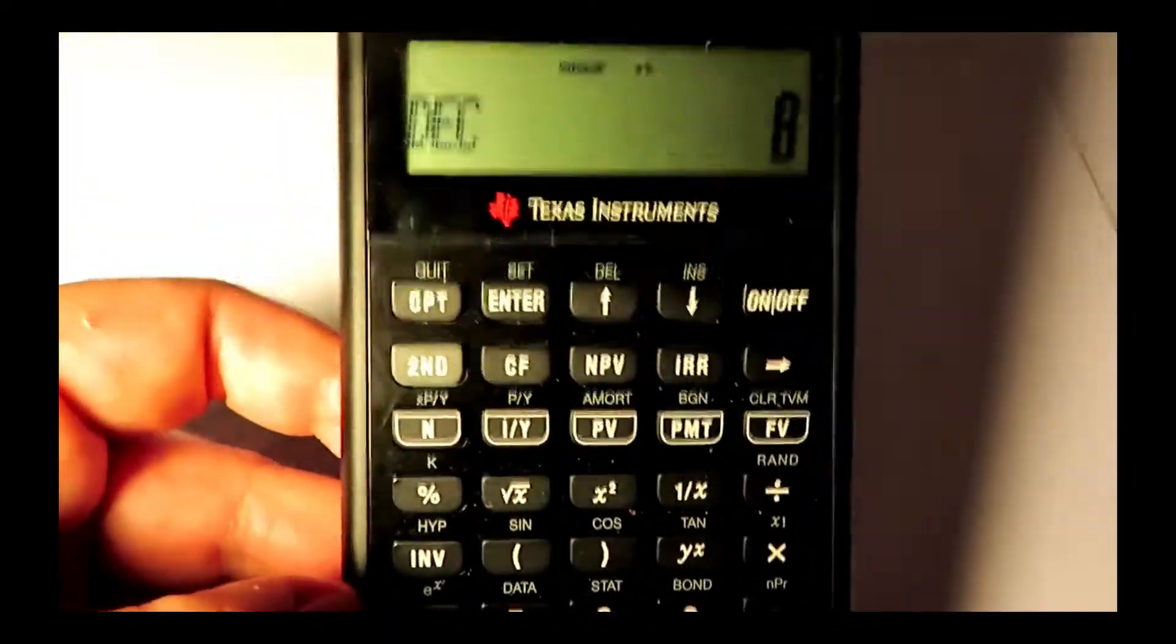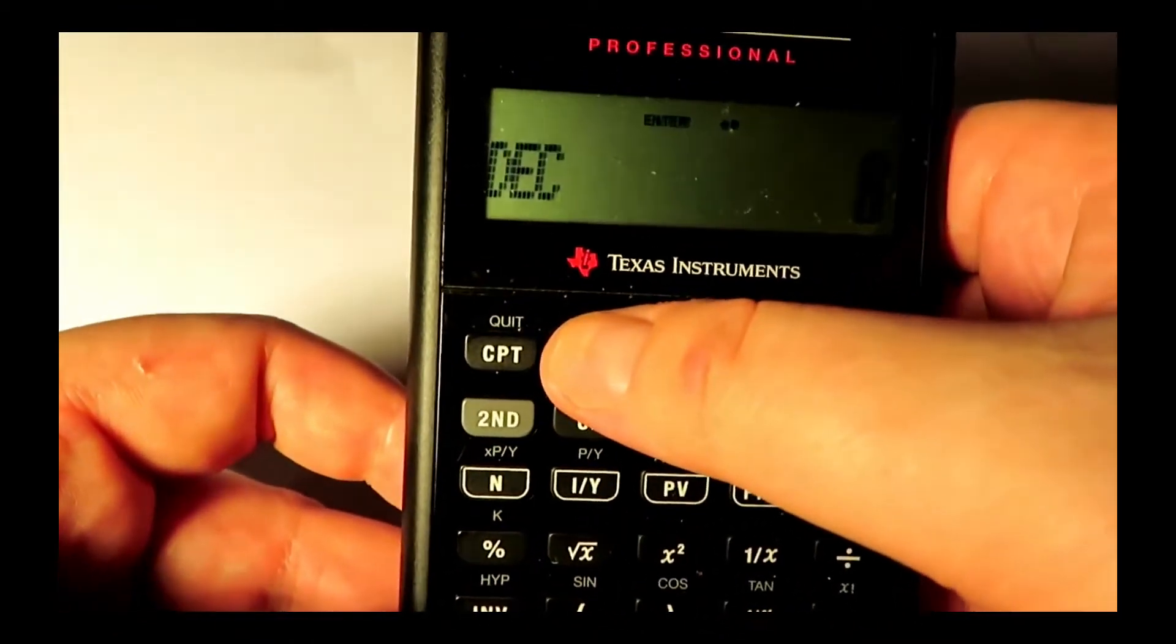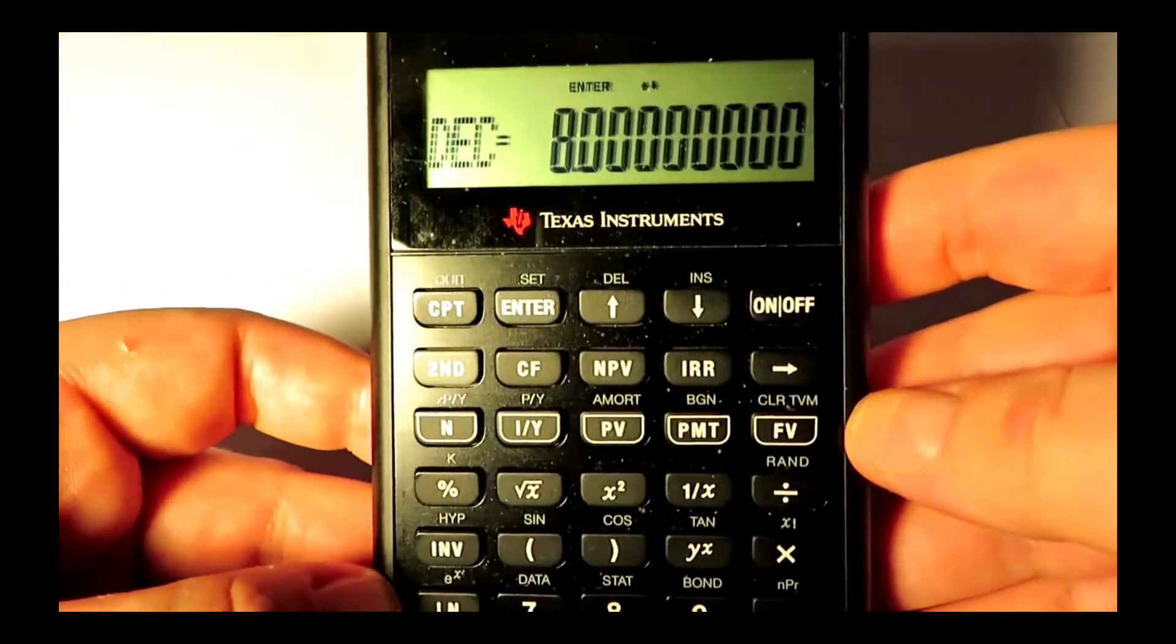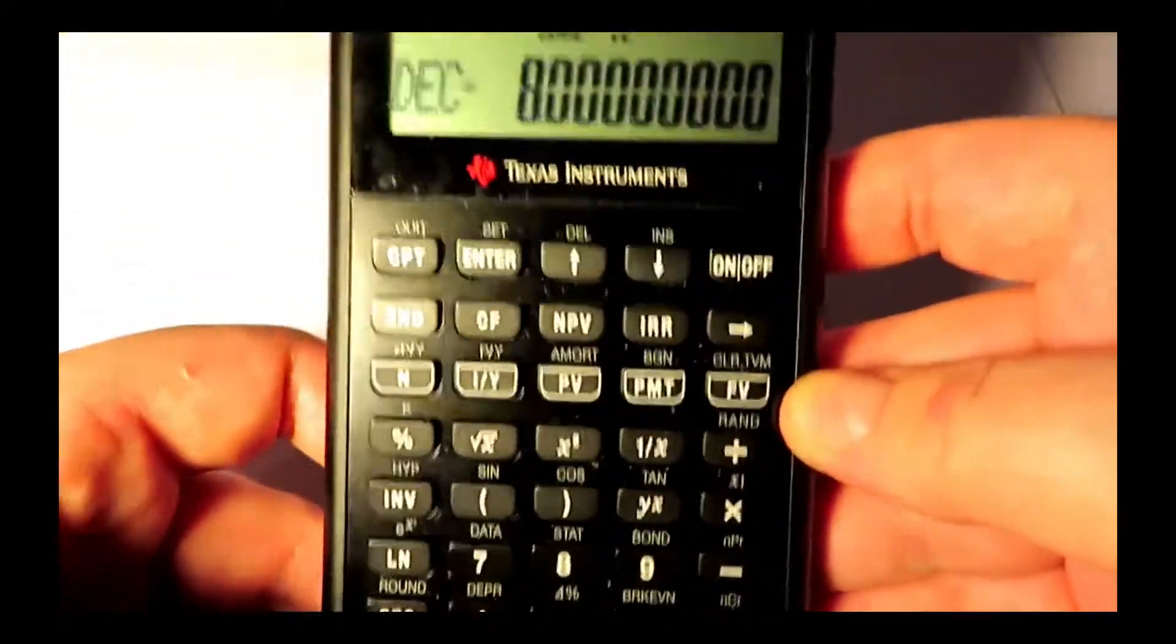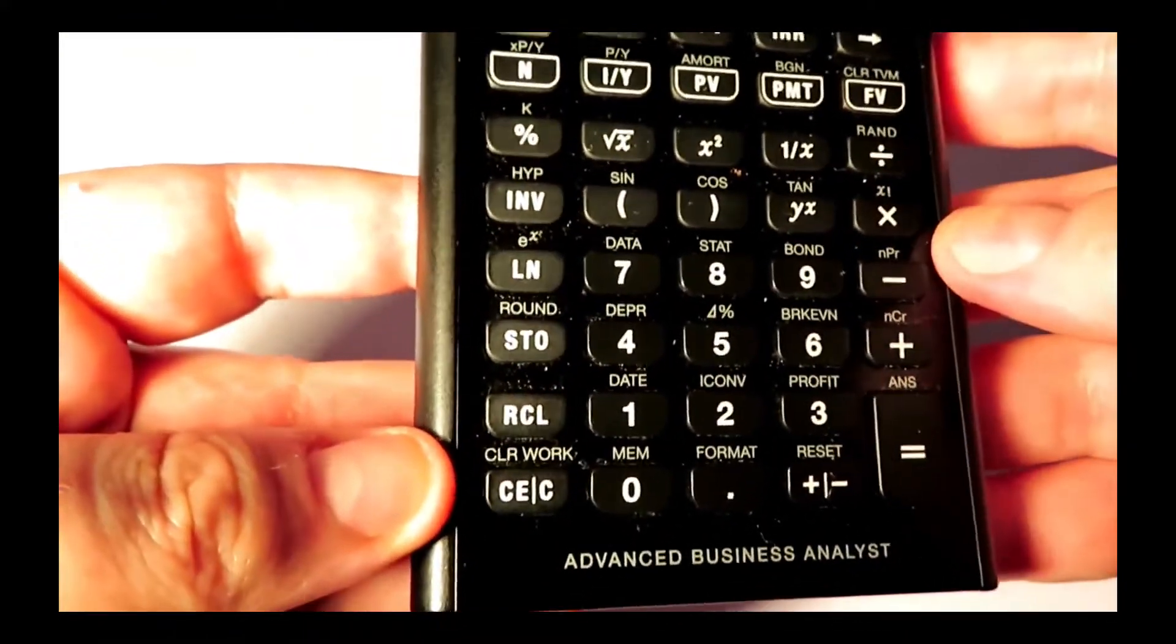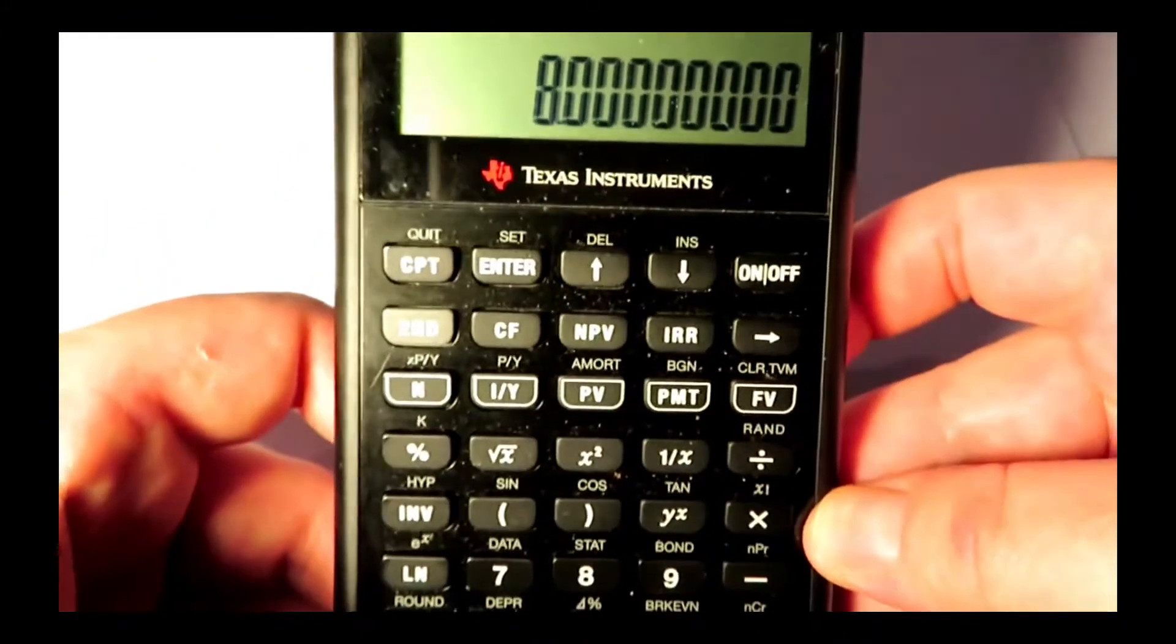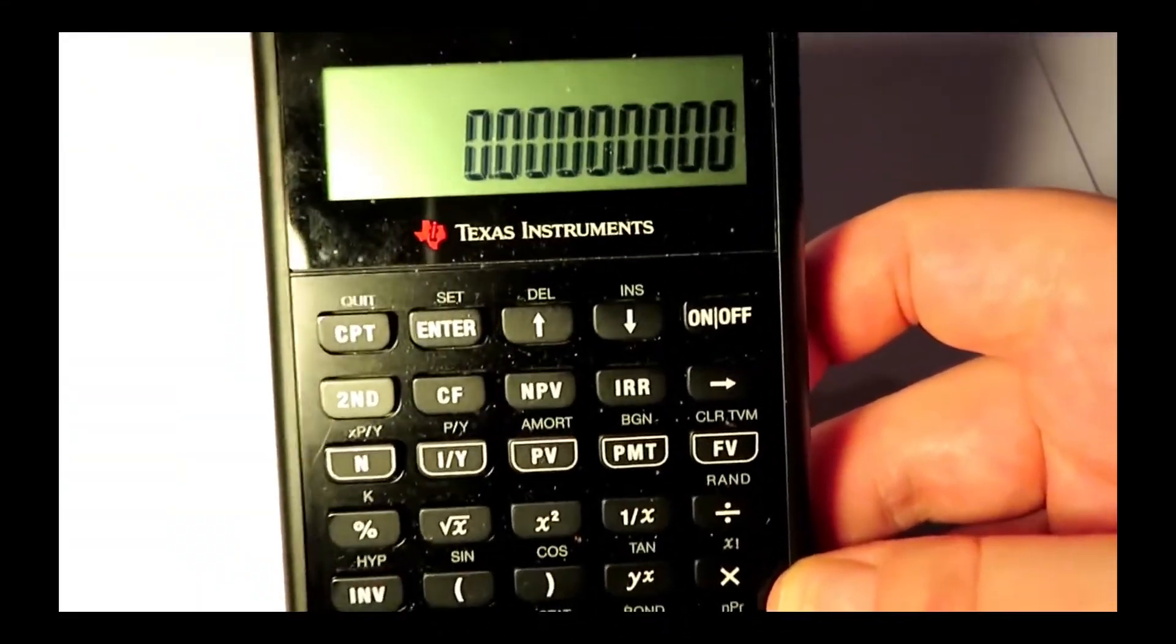And then up here, at the very top, you push the enter button to save the eight decimal places. And now we have eight decimal places, and then we do our clear, the CEC button on the bottom left-hand corner, and that'll get us back to our workspace. And now we have eight decimal places.